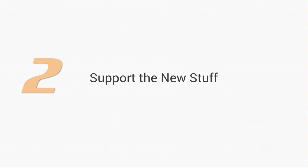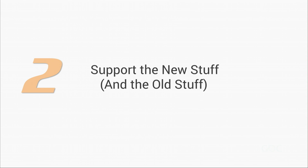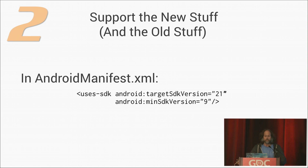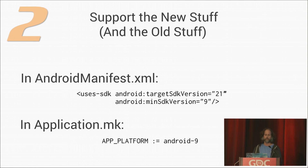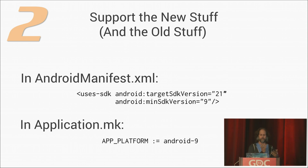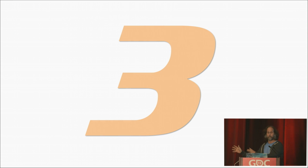Two: support the new stuff and the old stuff. In your manifest, always support the latest version you have tested against. This turns off any compatibility hacks that might slow your performance, and the featuring committee likes it. But if you're using an NDK application, your app platform must be less than or equal to your min SDK version, because this is a C++ ABI — we don't have forward compatibility.